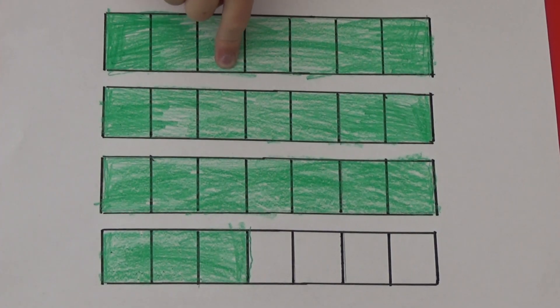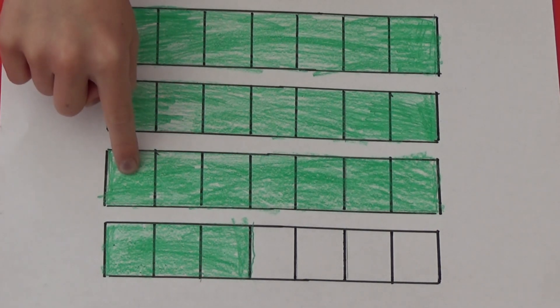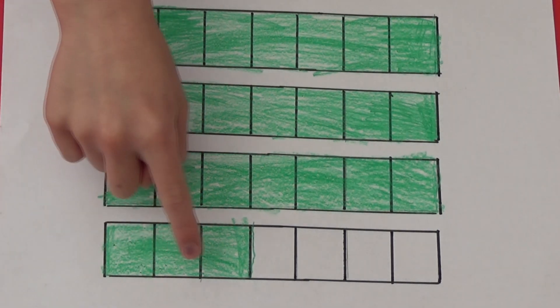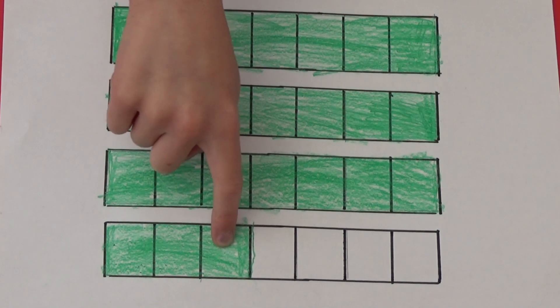We can see here that our rectangles are split into 7 equal parts or sevenths. There are 7, 14, 21, 22, 23, 24 sevenths altogether.